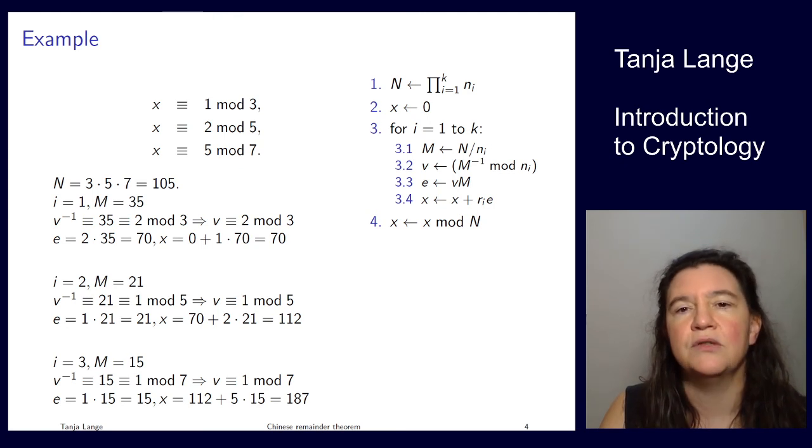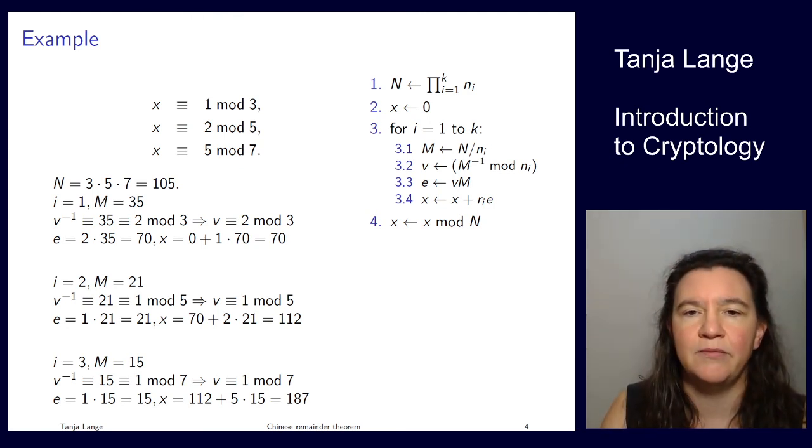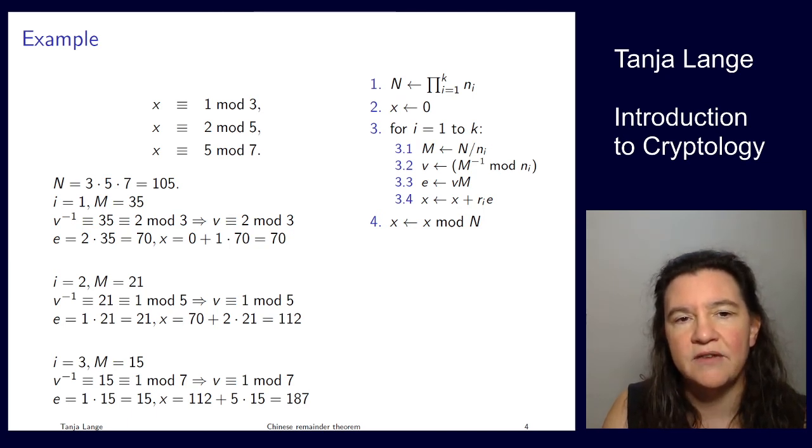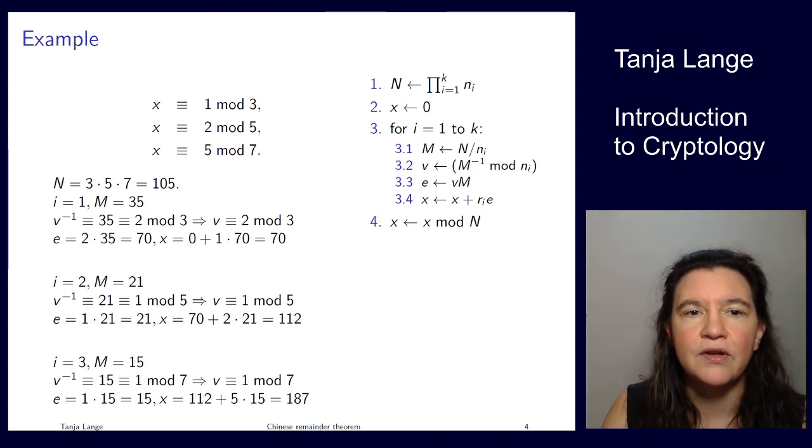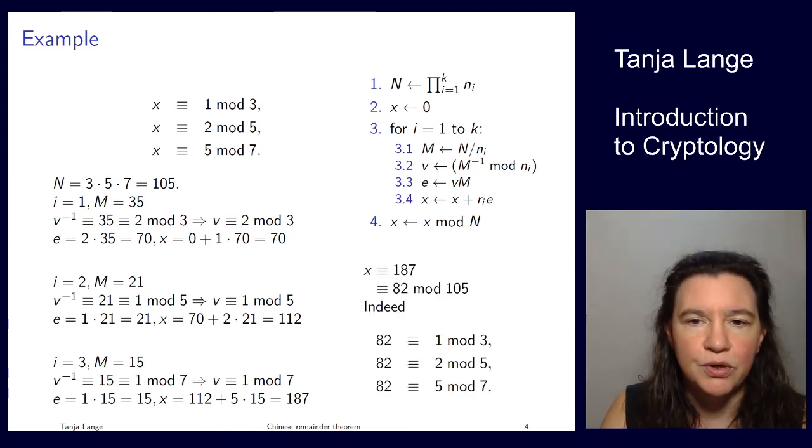Note I have just reached step 3.4 in the third iteration. I haven't done step 4 yet. In particular, the 187 is larger than the 105 which is the modulus, so I still need to do step 4. So I'm taking 187 and reduce modulo 105, leaving me with 82.